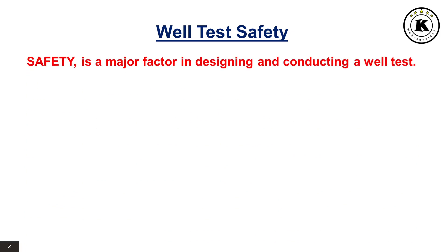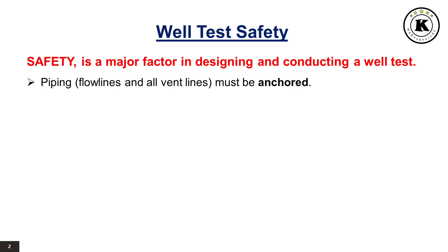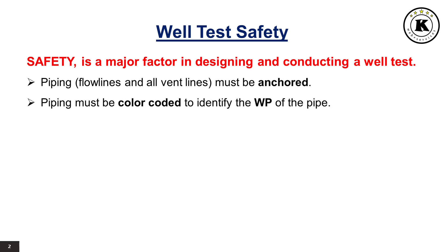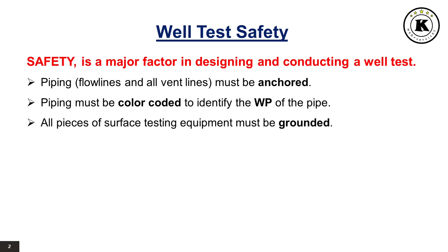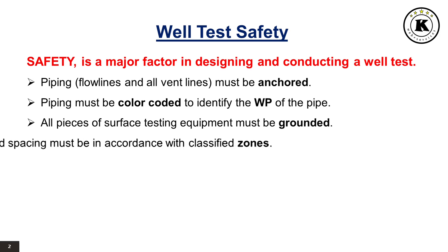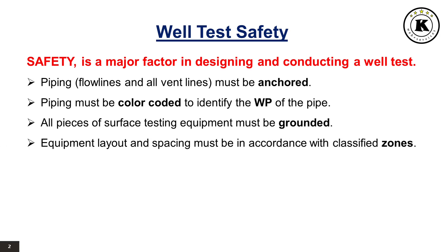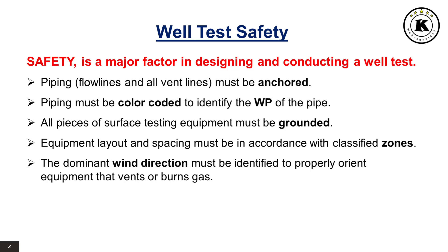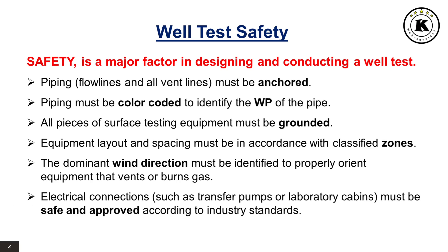Safety is a major factor in designing and conducting a well test. Piping, flow lines, and all vent lines must be anchored. Piping must be color-coded to identify the working pressure of the pipe. All pieces of surface testing equipment must be grounded. Equipment layout and spacing must be in accordance with classified zones. The dominant wind direction must be identified to properly orient equipment that vents or burns gas. Electrical connections such as transfer pumps or laboratory cabins must be safe and approved according to industry standards.